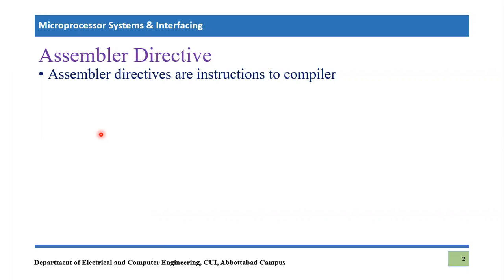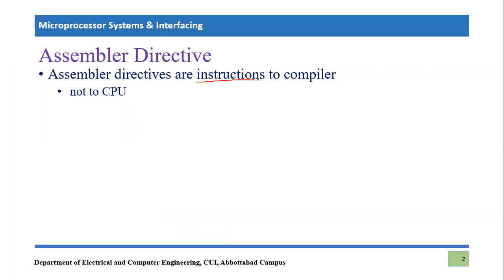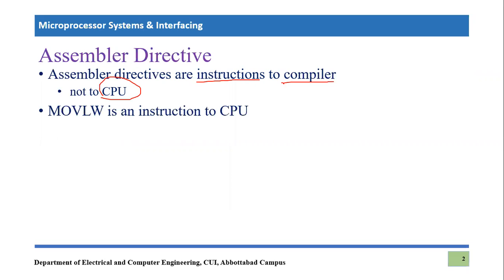Assembler directives are instructions to the compiler, not to the CPU — which is an important distinction. Normally we write instructions which are given to a compiler or assembler, and they convert them into machine code so that it becomes understandable by the CPU. But assembler directives are instructions for the compiler — not to be converted into machine code, but used by the compiler so it knows what it is supposed to do.